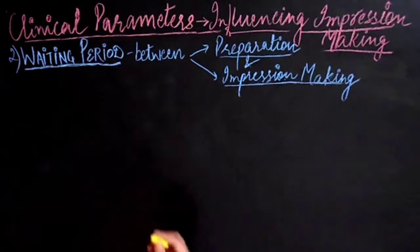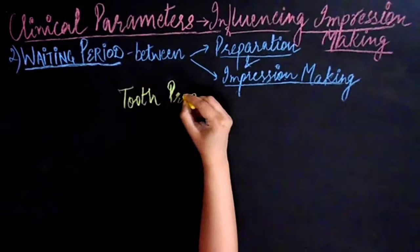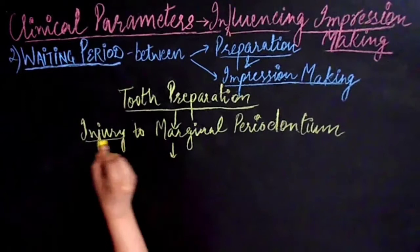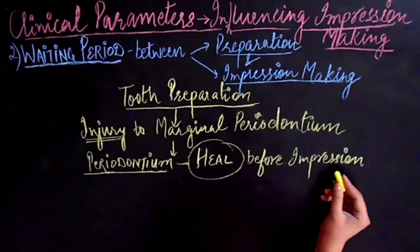Another commonly underrated parameter is the waiting period between preparation and impression making, which is really important for the success of an impression. Whenever injury to marginal periodontium occurs during tooth preparation, the periodontium should be allowed to heal completely before impression making.